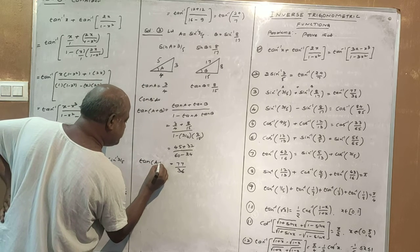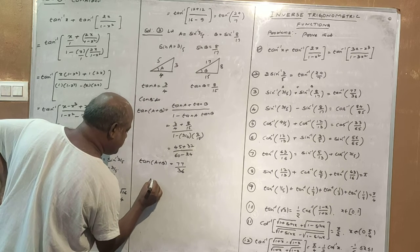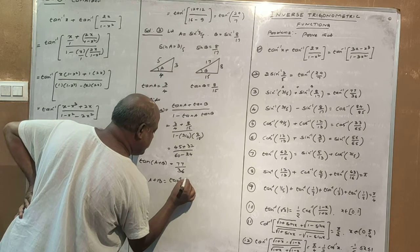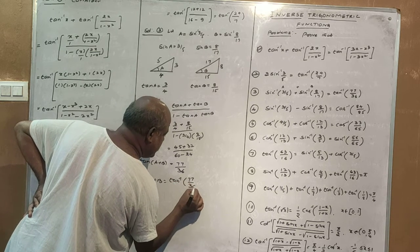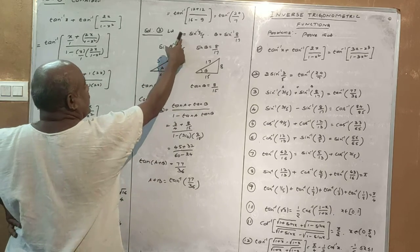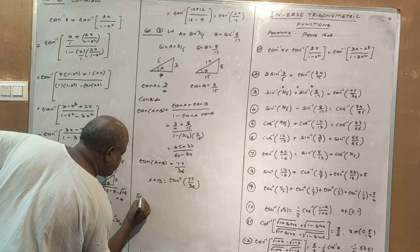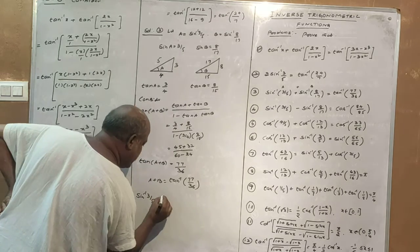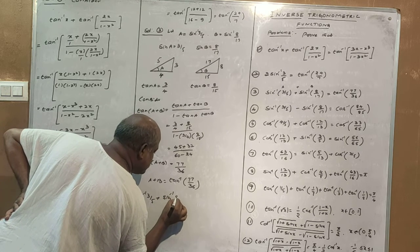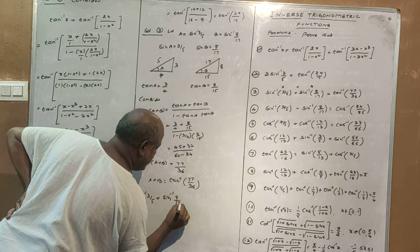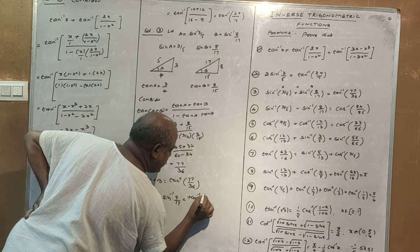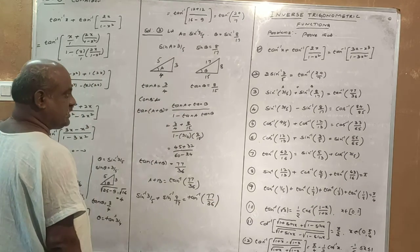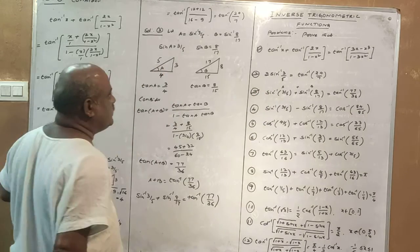Calculating: tan(A plus B) equals 3 by 4 plus 8 by 15 over 1 minus 3 by 4 into 8 by 15, which simplifies to 77 divided by 36. Therefore A plus B equals tan inverse of 77 divided by 36. So sin inverse 3 by 5 plus sin inverse 8 by 17 equals tan inverse 77 by 36.